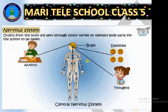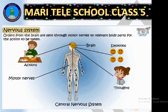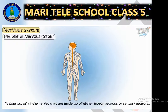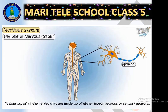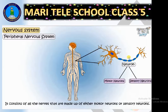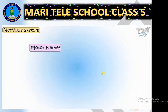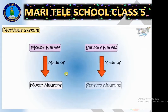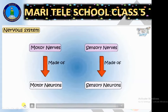Motor neurons and sensory neurons work together in opposite directions. Motor neurons send messages from the brain to the relevant parts of the body. The peripheral nervous system consists of all the nerves made up of either motor neurons or sensory neurons — motor nerves are made up of motor neurons, and sensory nerves are made up of sensory neurons.